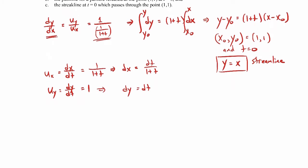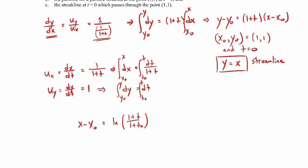Let's start with the x one first. On one side we have dx; the other side we have dt over 1 plus t. For the y one, we have dy equals dt. Integrating both sides from x-naught to x and t-naught to t, on the left-hand side for x we get x minus x-naught, and on the right-hand side that'll be a natural log — natural log of (1 plus t) all over (1 plus t-naught). For the y equation, we get y minus y-naught is equal to t minus t-naught.